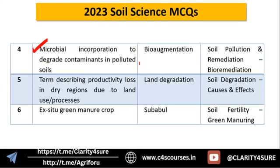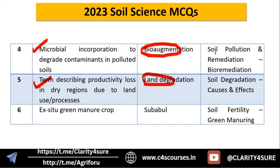The next 2023 question was on microbial incorporation of degraded contaminants in polluted soil — it is bio-augmentation, part of bioremediation and remediation concepts in soil pollution. Then there was a question describing productivity loss in dry regions due to land use or processes, which was a general question from land degradation. The last 2023 question was on ex-situ green manure crops — you need to understand which crops are used for ex-situ versus in-situ incorporation.